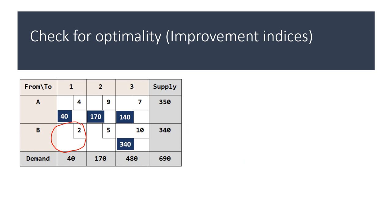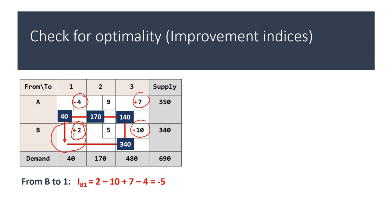Starting with the cell B to 1, you first find the closed path starting from that cell and back to it, putting alternating plus and minus signs where you change directions on the closed path. So if you start from P21 you put plus 2, then change direction minus 10, change direction put plus. The improvement index for P21 would be plus 2 minus 10 plus 7 minus 4, which gives minus 5.